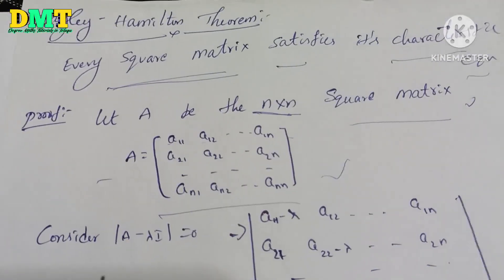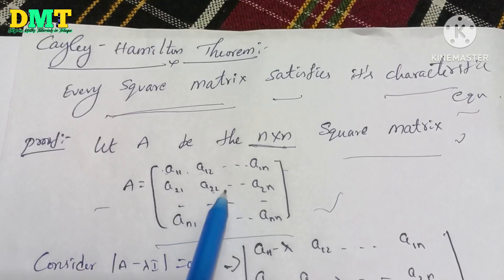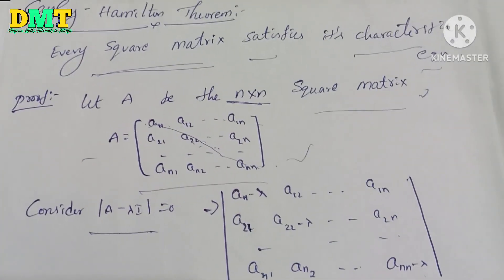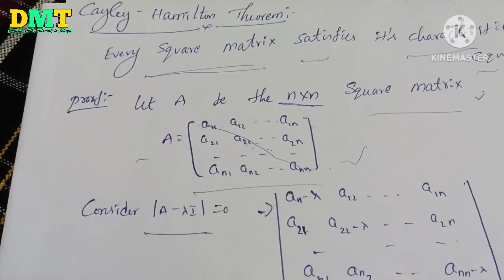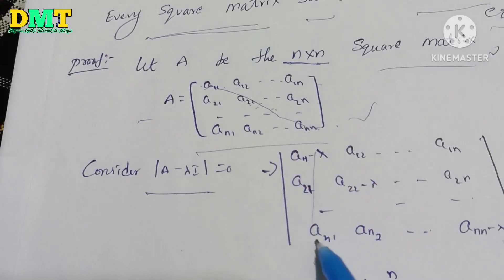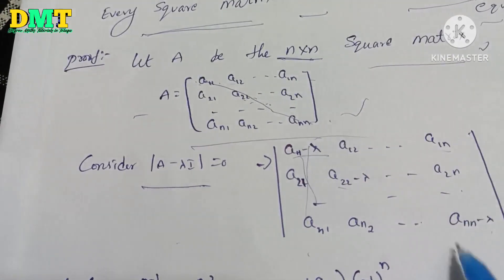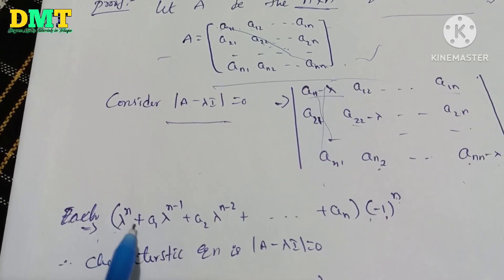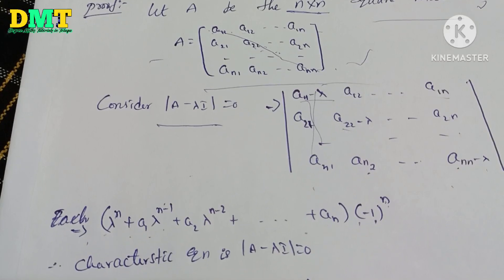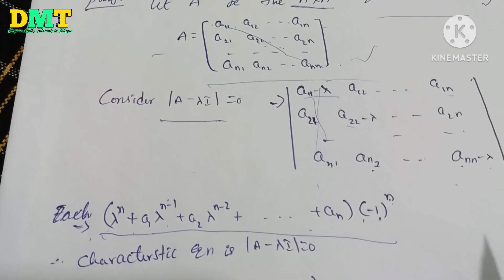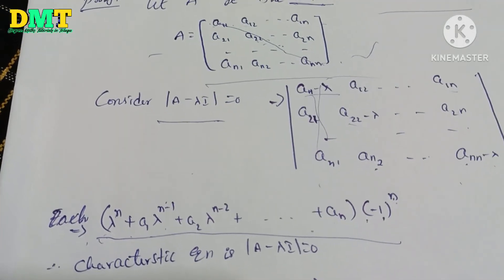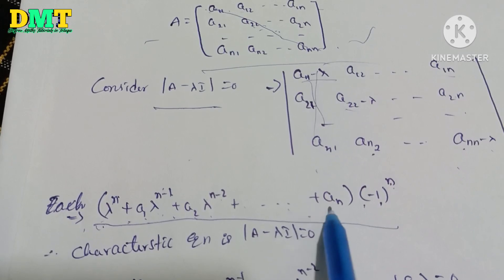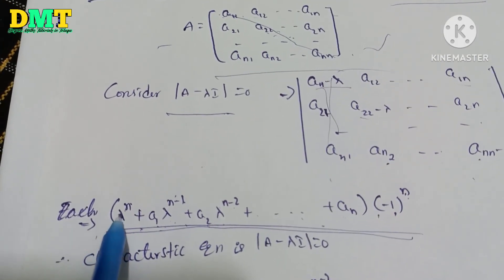The characteristic equation: consider |A − λI| = 0. The diagonal values are a11 − λ, a22 − λ, a33 − λ, and so on. Expanding this determinant gives: (−1)^n · λ^n + a1·λ^(n−1) + a2·λ^(n−2) + ... + an = 0. We can prove this equation step by step.